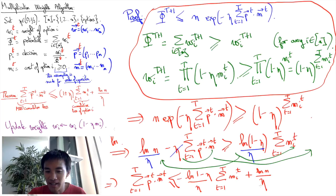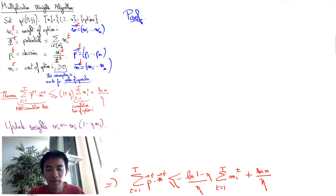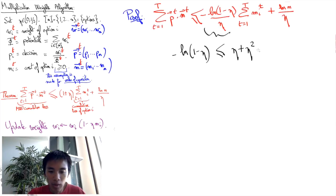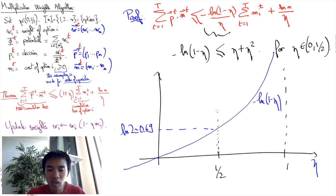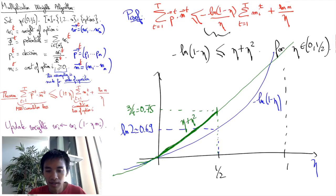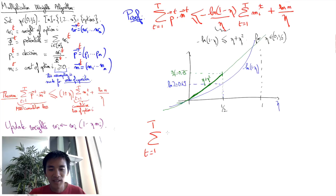To conclude, it now suffices to use the inequality minus log of 1 minus eta is smaller or equal to eta plus eta squared for eta in (0, 1/2), and this is something you can visualize in this figure and you can use convexity to prove this formula. And there we have it, we obtain finally the inequality of the theorem. QED.